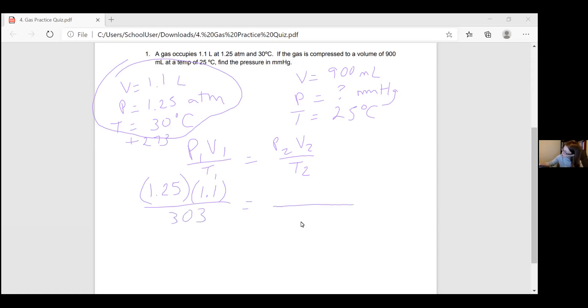On the other side, I'm solving for the pressure. My volume, I would want to convert into liters first to match the other liters. And my temperature, I also have to convert to Kelvin by adding 273.